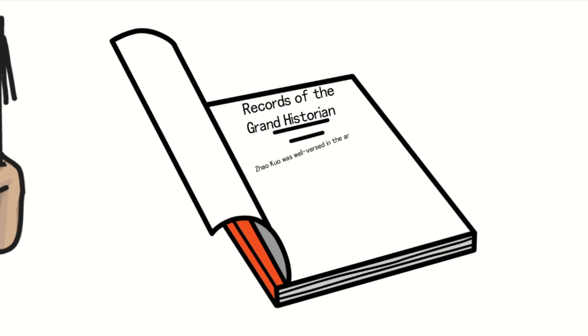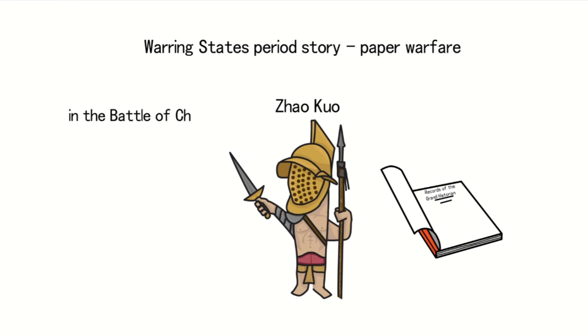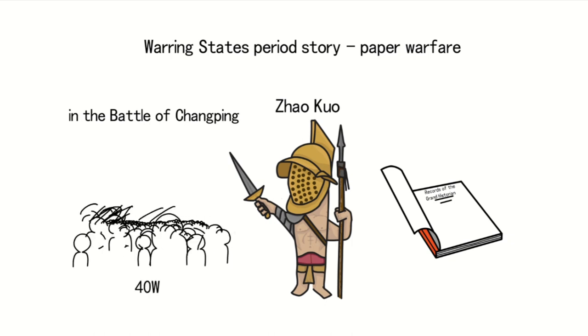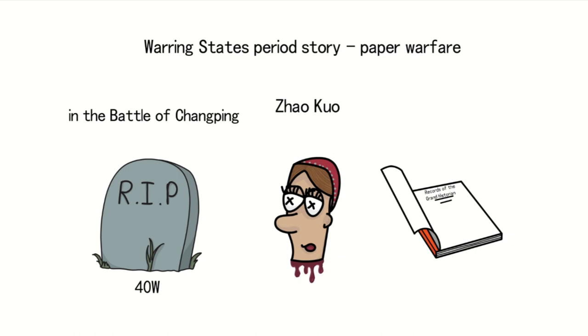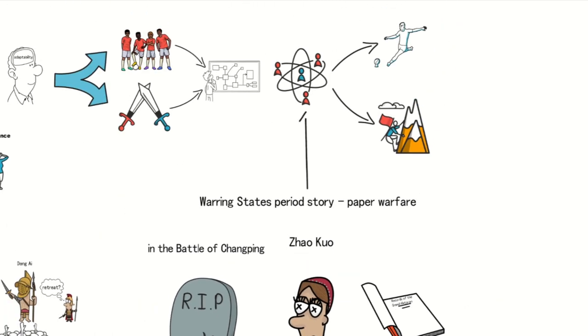Zhao Kuo was well-versed in the art of war, to the point where even his father, a renowned general, couldn't stump him, and he became quite arrogant. However, in the Battle of Chongping, he fell for a strategic trap, leading to the complete annihilation of his army of 400,000 soldiers, and his own demise. This serves as a typical example illustrating that having theoretical knowledge alone, without the ability to perform under real battlefield conditions, is insufficient.